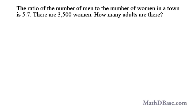In a small town's demographic survey, we are told that the ratio of the number of men to the number of women is 5 to 7. If there are 3,500 women in the town, what is the total number of adults?